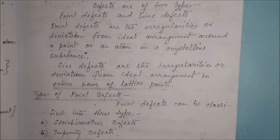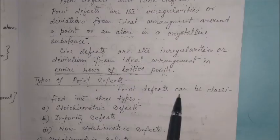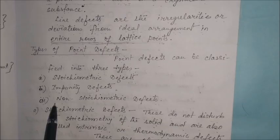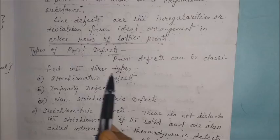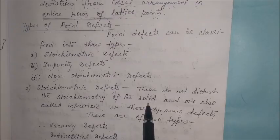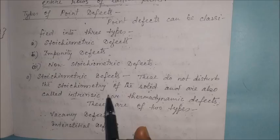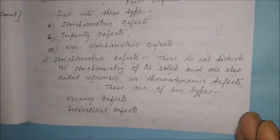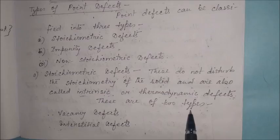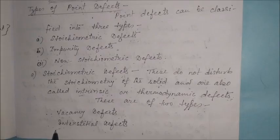Point defects can be classified into three types: first, stoichiometric defects; second, impurity defects; and third, non-stoichiometric defects. Stoichiometric defects do not disturb the stoichiometry of the solid and are also called intrinsic or thermodynamic defects — meaning the stoichiometry will remain unchanged. There are two types of stoichiometric defects: vacancy defect and interstitial defect.